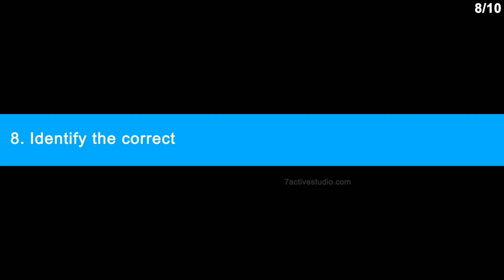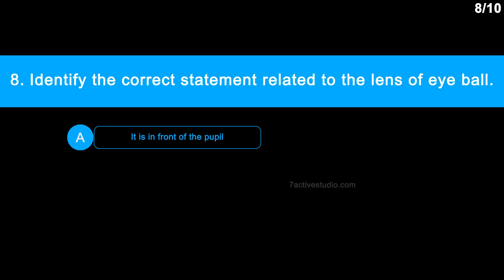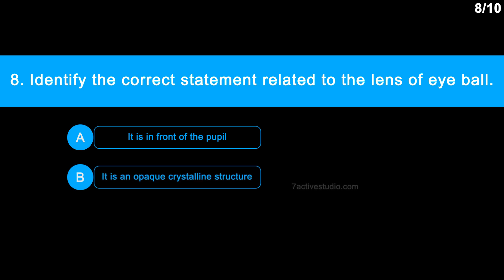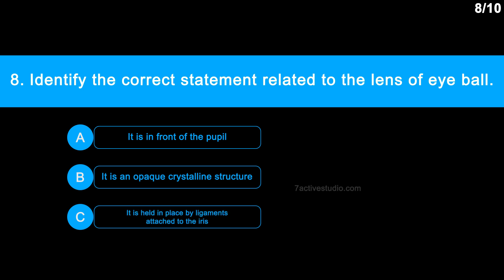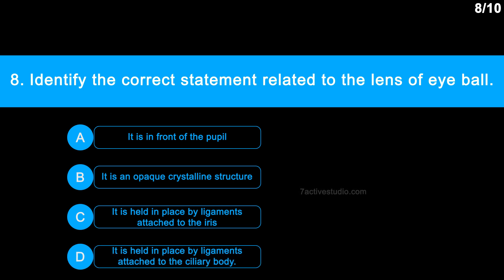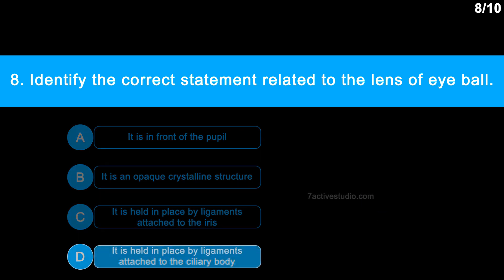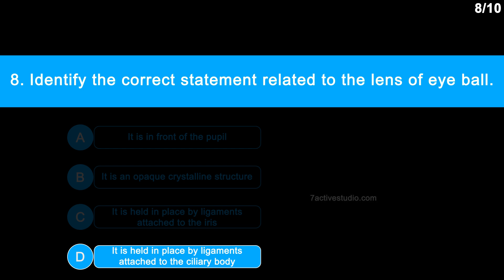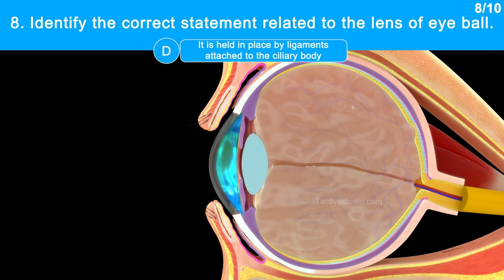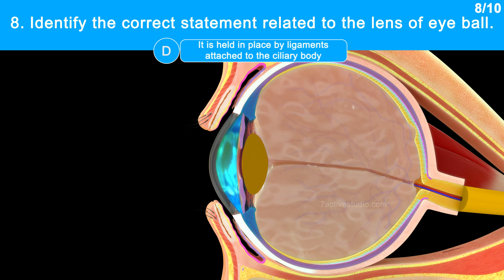Question number 8: Identify the correct statement related to the lens of eyeball. Option A: it is in front of the pupil. Option B: it is an opaque crystalline structure. Option C: it is held in place by ligaments attached to the iris. Option D: it is held in place by ligaments attached to the ciliary body. The correct answer is option D. It is transparent and behind the pupil, held in place by ligaments that are connected to the ciliary body, but not the iris.